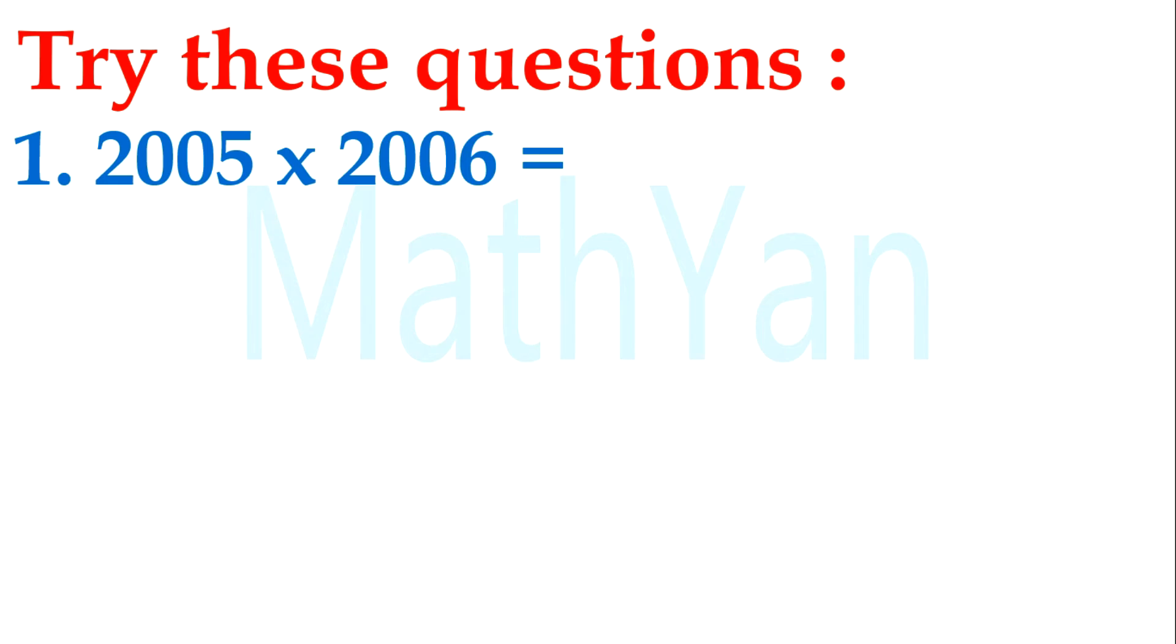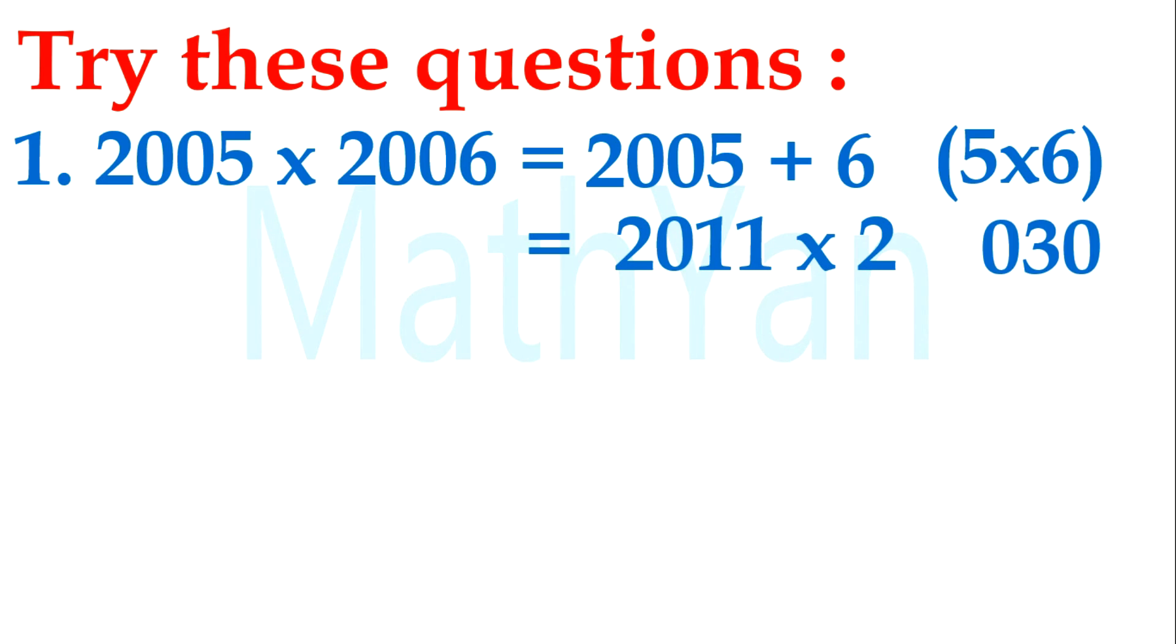Let's try this: 2005 times 2006. 2005 plus 6, and the pin number is 5 times 6. So it's 2011 times 2. The pin number is 30. For base 2000, you need 3 digits. So it becomes 4022030.